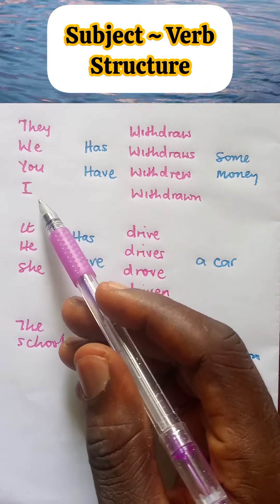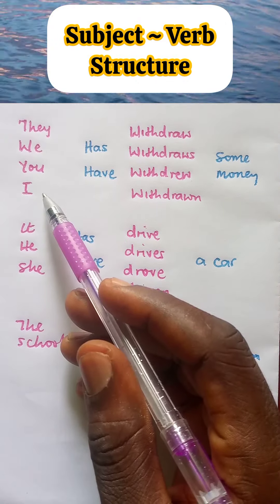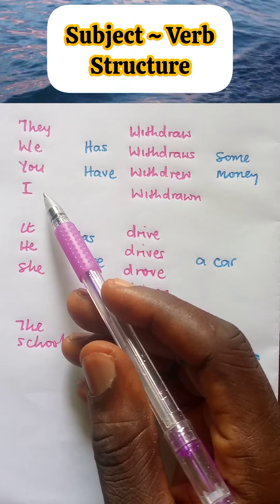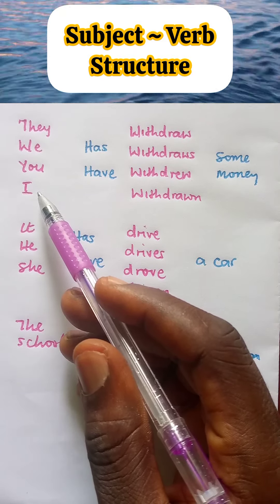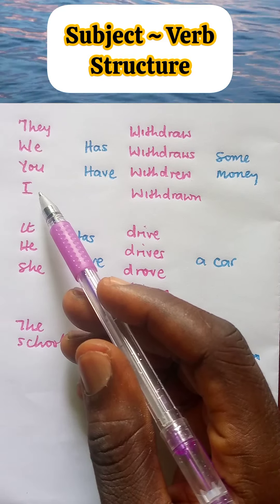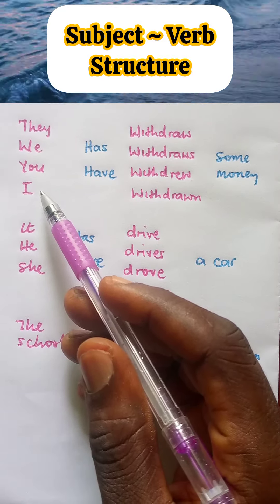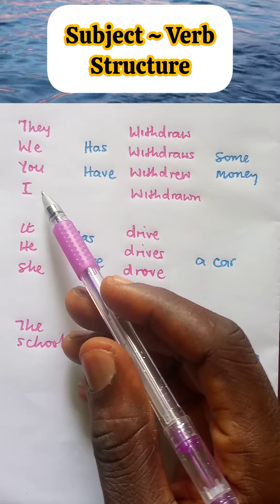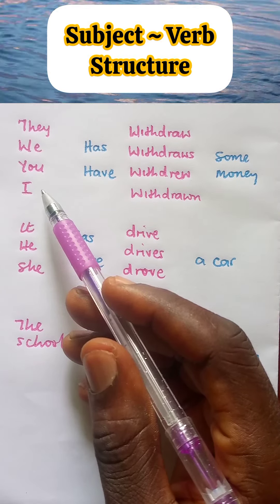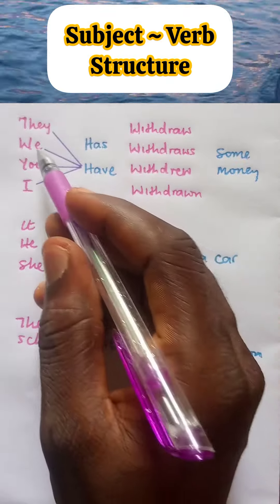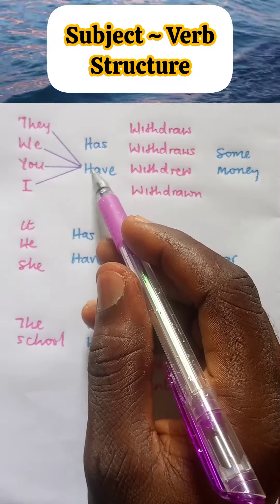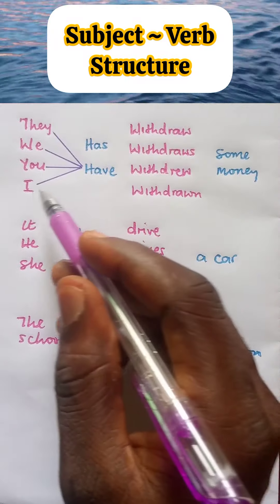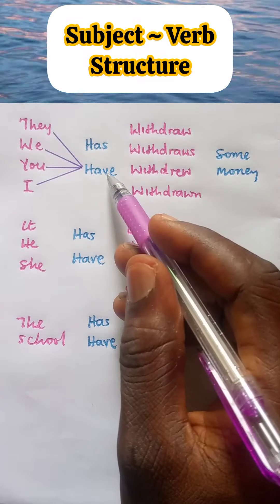The reason is because I is a first person pronoun. And as a rule, first person pronouns take a plural verb. So, we have: they have, we have, you have, I have.